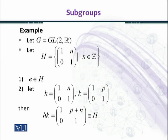Let h = [[1, n], [0, 1]] and k = [[1, p], [0, 1]]. We have picked two arbitrary elements from set H, and now we will multiply them and see whether their multiplication is present in H. h * k = [[1, p+n], [0, 1]].